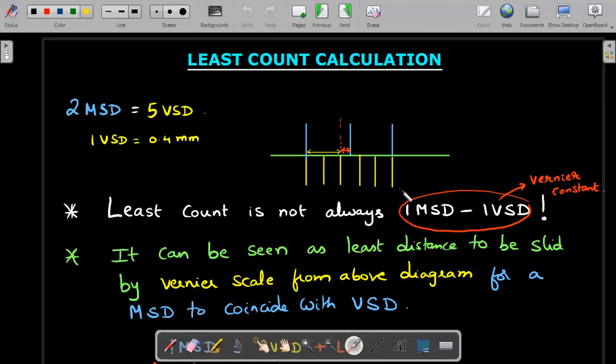Now coming to the least count calculation. First and foremost, least count is not always 1 MSD minus 1 VSD. 1 MSD minus 1 VSD is called Vernier constant and Vernier constant and LC are not the same. LC is not VC. In order to calculate what is meant by LC, you need to know the definition. It can be seen as the least distance to be slid by Vernier scale from the above diagram. You should understand that least count is independent of the zero error. You need to first get the zeros of the two main scale and the Vernier scale together, and from there you should calculate the least count.